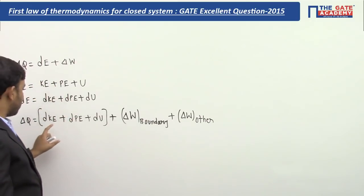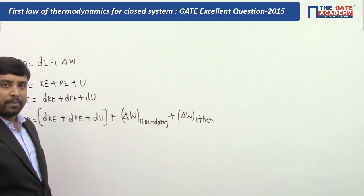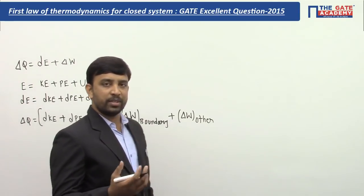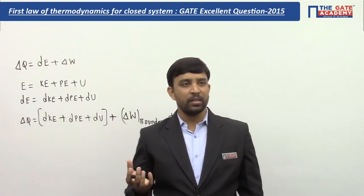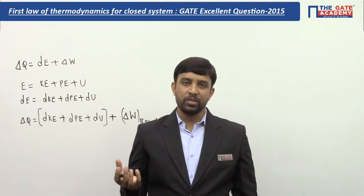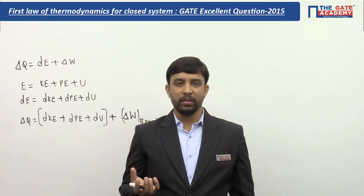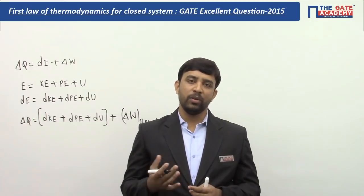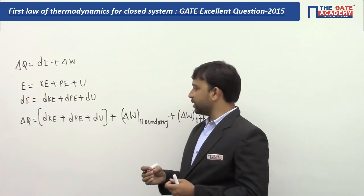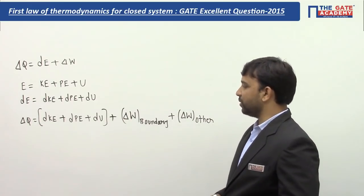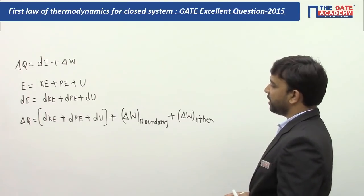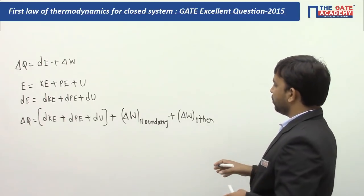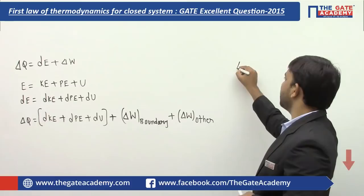This is the most generalized first law equation for a process. When we apply constraints — for example, if the closed system is stationary, meaning it has no velocity — then there is no change in kinetic energy and no change in elevation, so change in potential energy is also zero. If we also assume no other work interactions except boundary work, those other works become zero too.